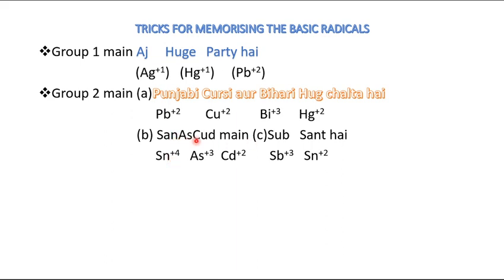This is a fictitious place called 'Sanaskud.' I keep in mind that it is a place. 'Sanaskud, I am a sub-saint' — sant being the Hindi word for saints. There are five ions that belong to the B and C groups of Group 2.